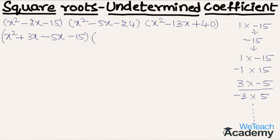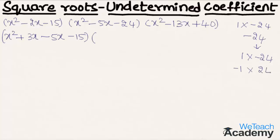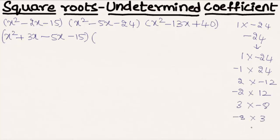Now let us factorize the second expression. Multiplying the coefficient of x² and the constant term gives -24. The factors of -24 include 1×(-24), (-1)×24, 2×(-12), (-2)×12, 3×(-8), (-3)×8. Adding 3 and -8 gives -5, which is the coefficient of x. So we write this expression as x² + 3x - 8x - 24.